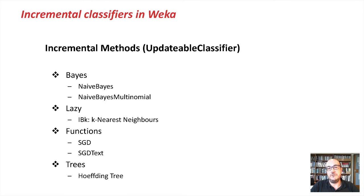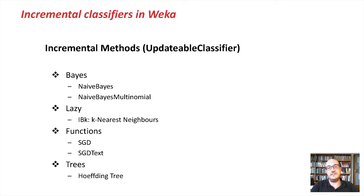Weka has many different incremental methods. To know which ones are incremental, we need to check that they implement the updatable classifier interface. We can find many different methods such as Naive Bayes, Naive Bayes Multinomial, nearest neighbors, stochastic gradient descent, and also some decision trees like the Hoeffding tree.